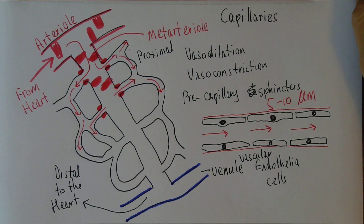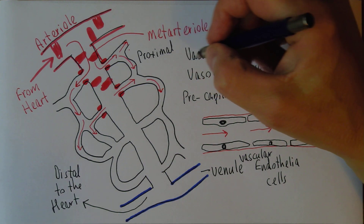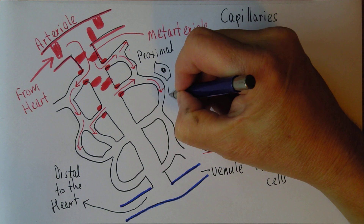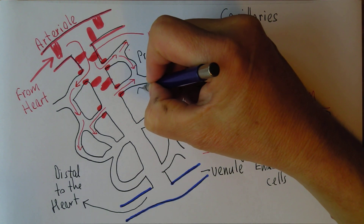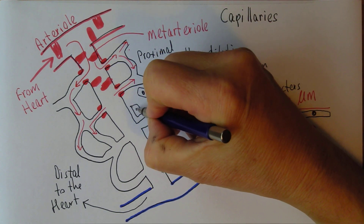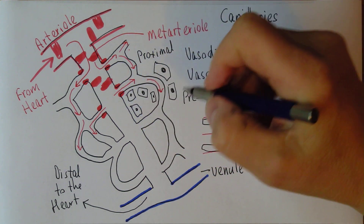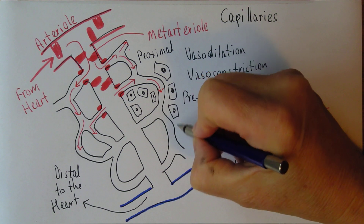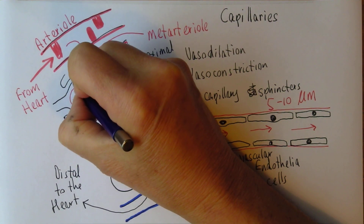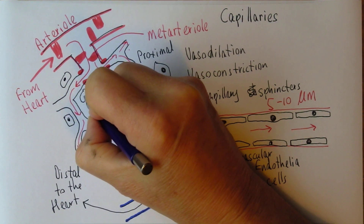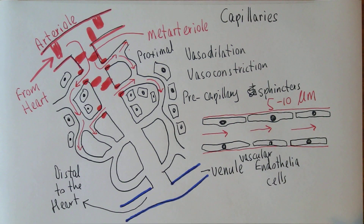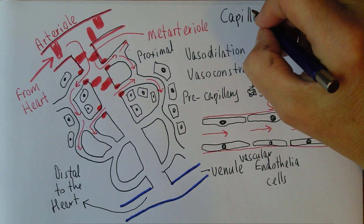The blood is flowing through here, and these capillaries are in very close contact with the tissue cells of whatever tissue we are in — could be muscle tissue, could be brain tissue. The capillaries are in close contact with all the tissue cells, because the only way the tissue cells are going to get oxygenated, get a food supply, and get rid of waste products is by exchange between the cells and the capillaries.